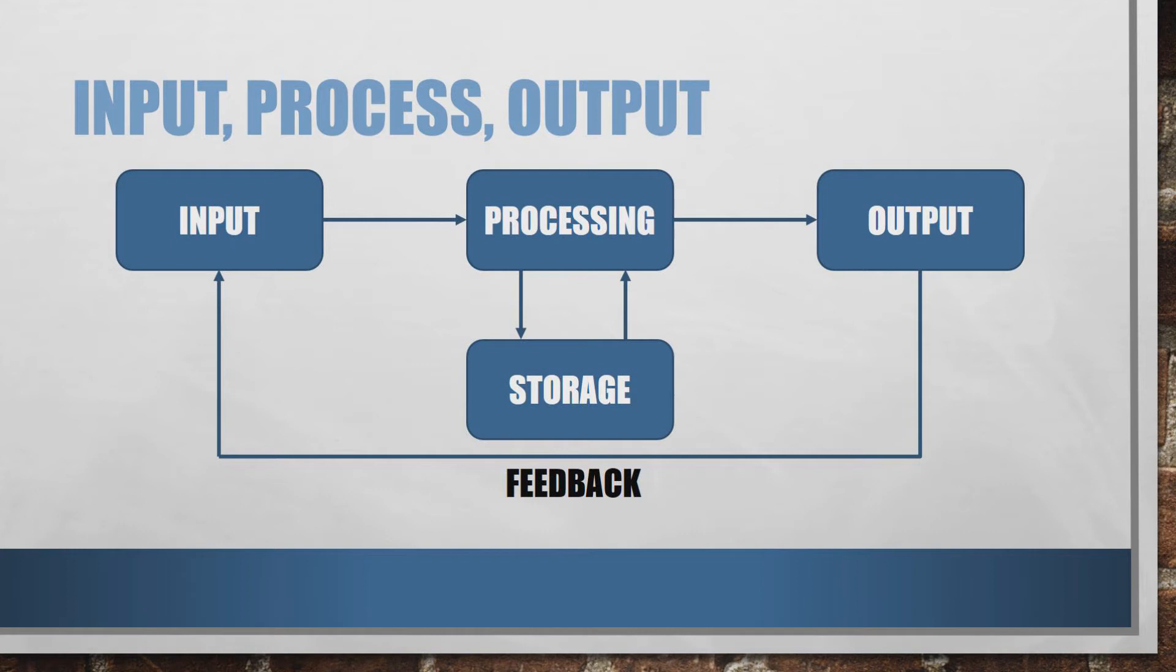Once the data has been transformed, it then reaches the output stage. And during the output stage, that's when our data or information flows back out of the system again. And the feedback element comes in when we take the output of one process and use that as an input for a future process.